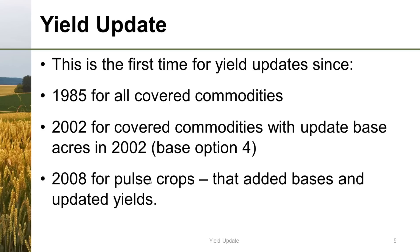Producers chose not to use base option four and update their yields because updating their yield might have hurt their base acre side. And if they did take base option four, we're seeing cases where it's still advantageous to update their yields again under this opportunity, even though they updated as recently as 2002. In 2008, all crops were added and they could update their yields, though that's not really germane to the crops produced in Illinois.